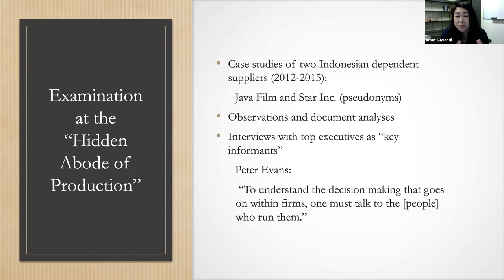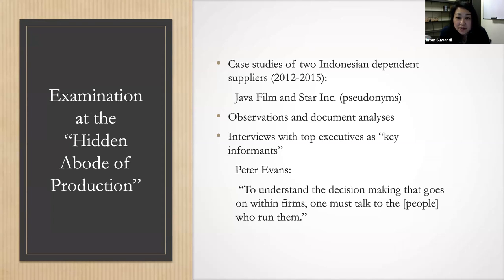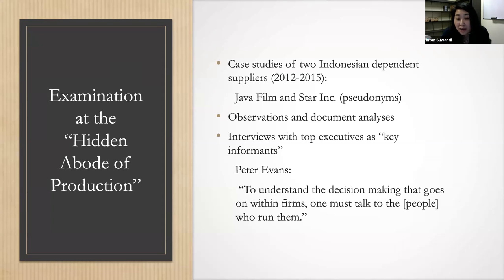These companies are related to plastics — Jaffa Film is a plastic company and Star Inc. makes packaging from plastic for multinational products, such as the packaging and labeling of hand sanitizers. I observed documents, observed the factories, but the main part of the study is that I interviewed top executives as key informants. To understand decision-making within these firms, you have to talk to them.